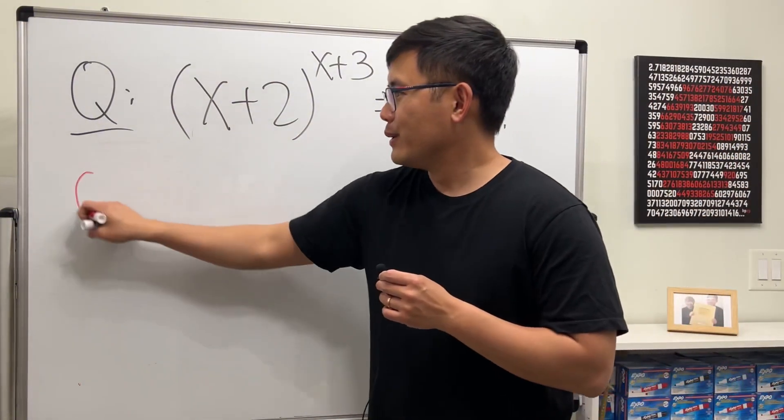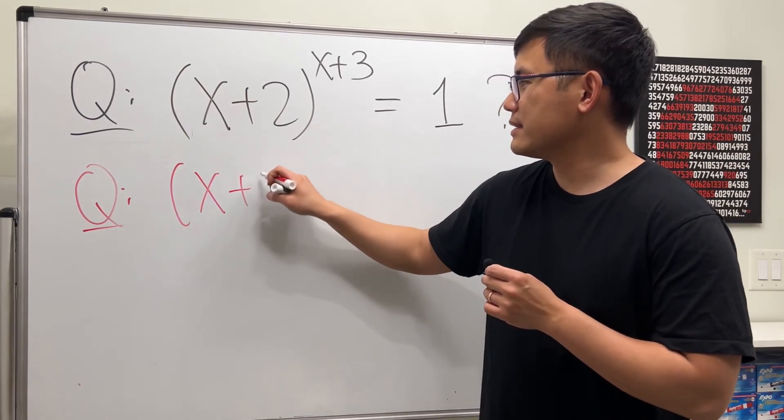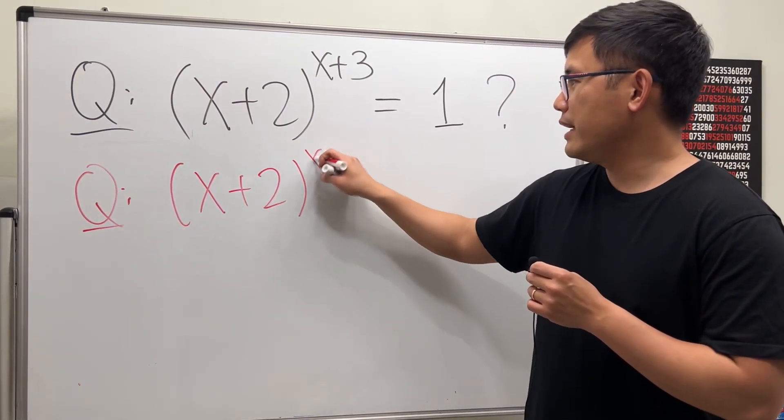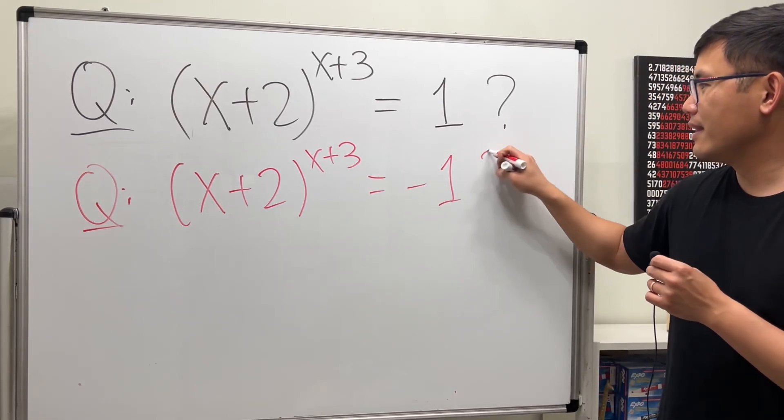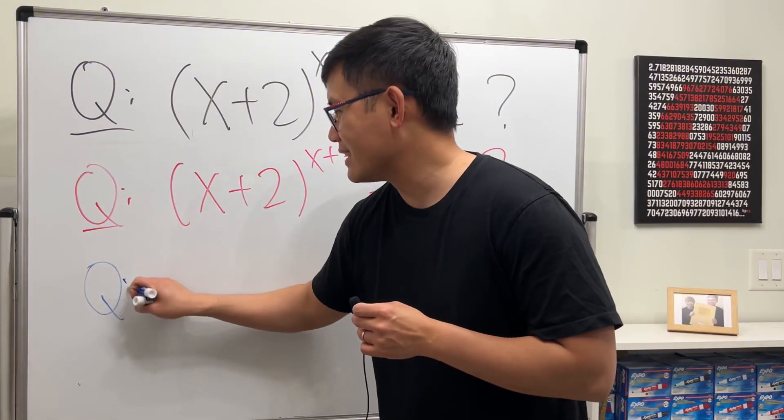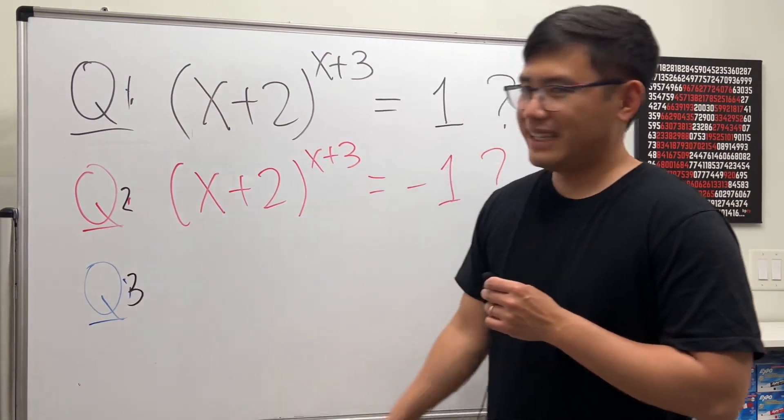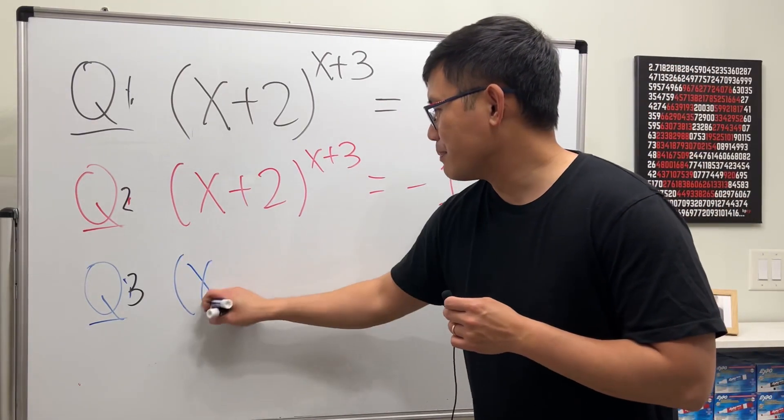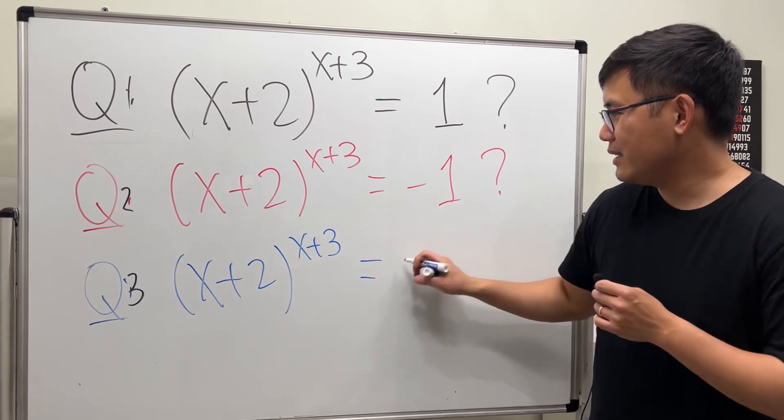And as a super bonus, how about if you can make x plus two raised to the x plus three equal to negative one? All right, and perhaps just do one more. Why not? So number one, two, and three. Last one, last one: x plus two raised to the x plus three, can you make it equal to zero? Try it, try it.